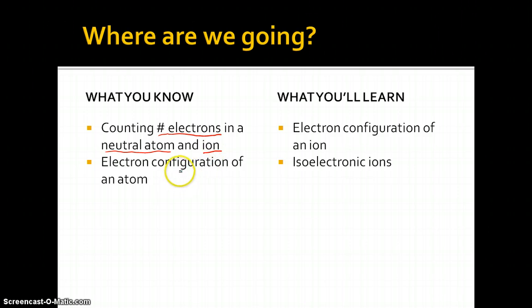And you also already know how to find the electron configuration of an atom. Today we're going to combine these two pieces of knowledge to find the electron configuration of an ion, and we're also going to talk about this term here, isoelectronic ions.